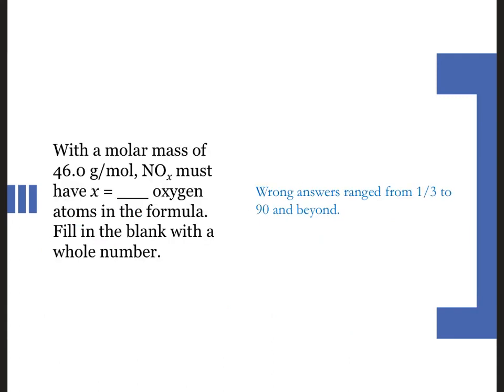All right, setting this one up. If we want to solve for x in this formula, we're going to say that we have one mole of nitrogen with a molar mass of 14.01 plus x moles of oxygen with a molar mass of 15.999. That's the x we're solving for. And that's going to be equal to 46. So if we take 15.999x and subtract 14 from both sides, we get 46 minus 14.01 gives us 31.99.